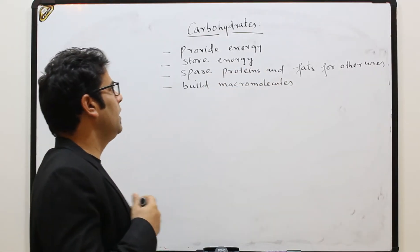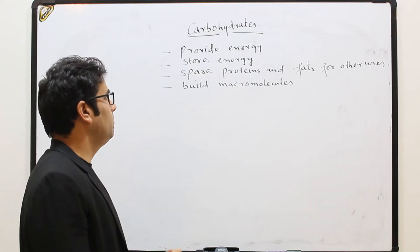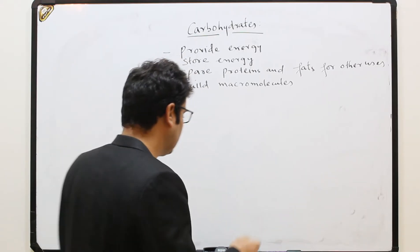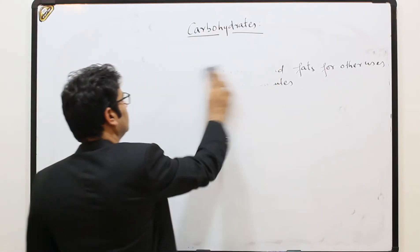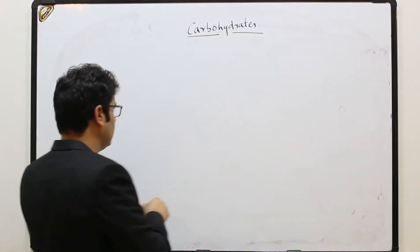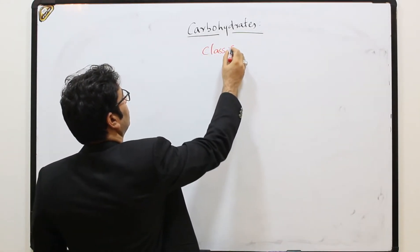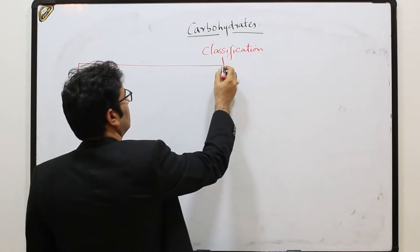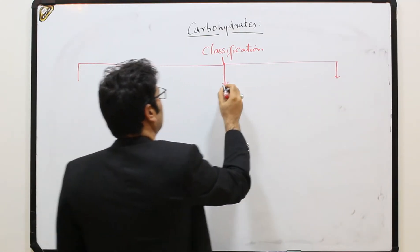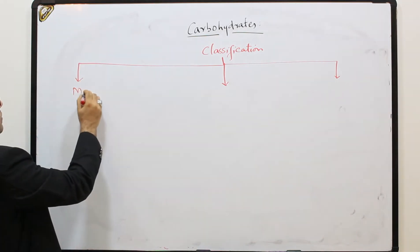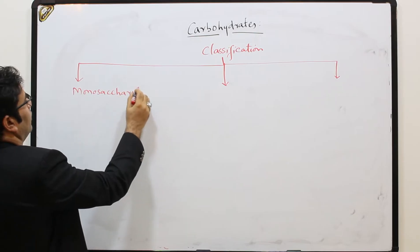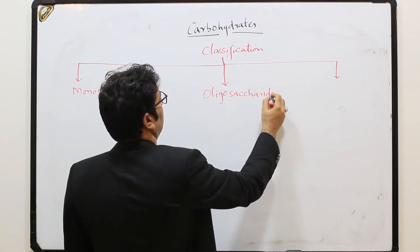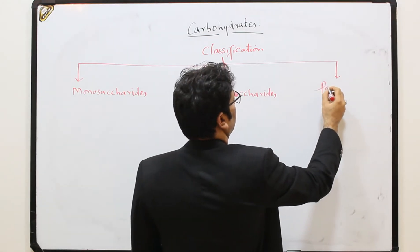These are the four main functions of carbohydrates. The main topic today is classification of carbohydrates. Generally we classify carbohydrates into three classes: number one is monosaccharides, number two is oligosaccharides, and number three is polysaccharides.